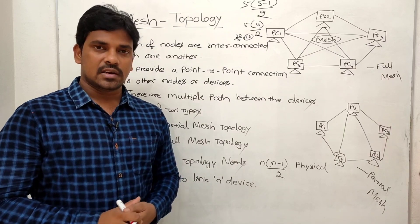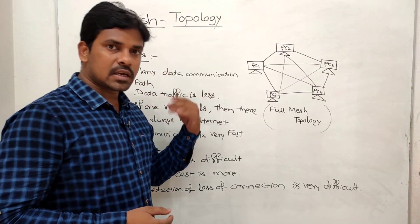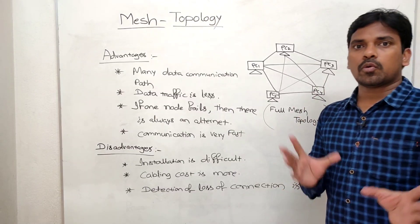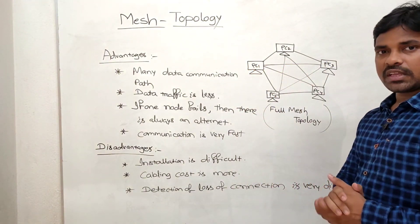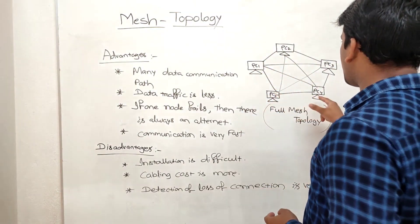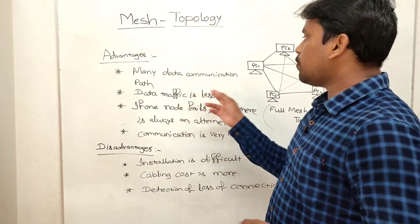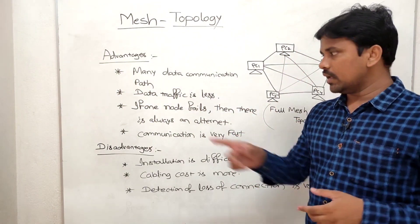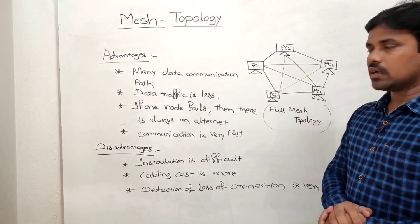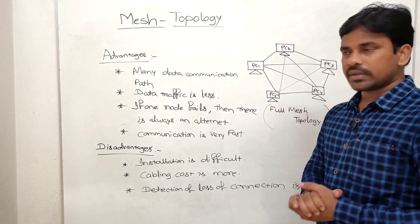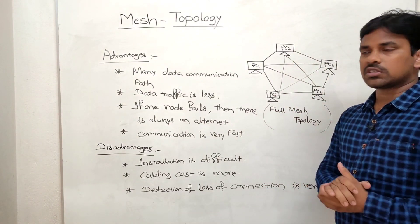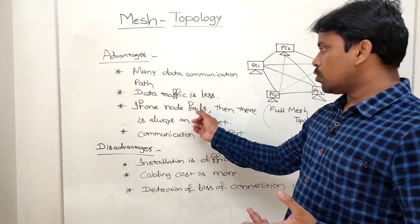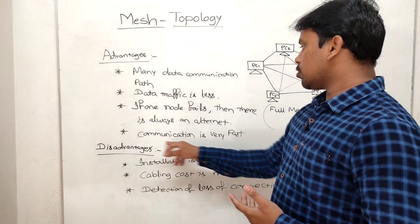Now the advantages and disadvantages of mesh topology. Advantages: first, there are many data communication paths available. For example, between PC1 and PC3 there are multiple paths. Data traffic is less because of direct connections. If one node fails, there is always an alternate path, so you can still send data. Communication is very fast.